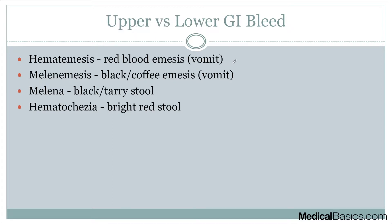Now that you know the different nomenclature of the types of GI bleeds, really how we think about GI bleeds is broken down into upper versus lower. Depending on how you describe the emesis or the stool, it's going to lead you more towards the differential of an upper versus lower GI bleed. When we're talking about any type of emesis, we're really just talking about upper GI bleeds. It's going to be very difficult for a lower GI bleed to cause emesis — it would have to pass through the intestines and through the stomach, and that would be quite difficult.